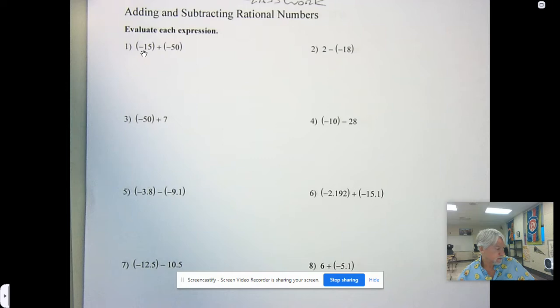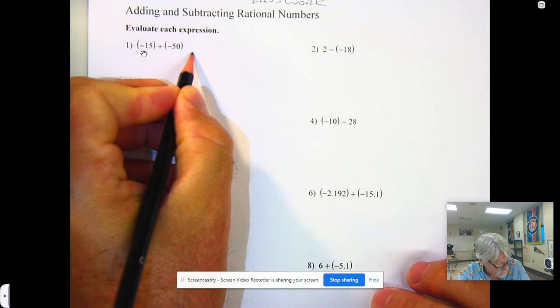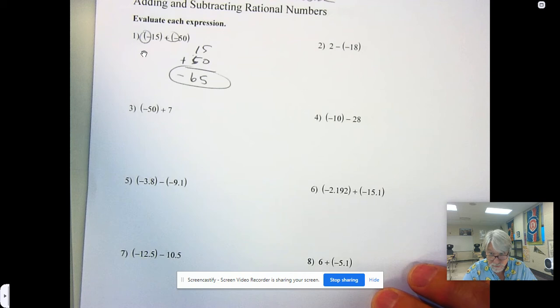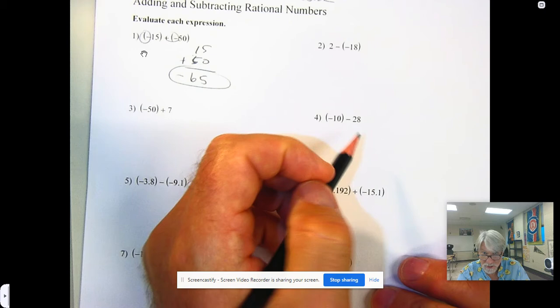We've got negative 15 and negative 50, and remember when the signs are the same, we're just going to add those numbers together and then use the sign of those numbers. Whenever we're adding numbers with the same sign, just add them and use that sign.